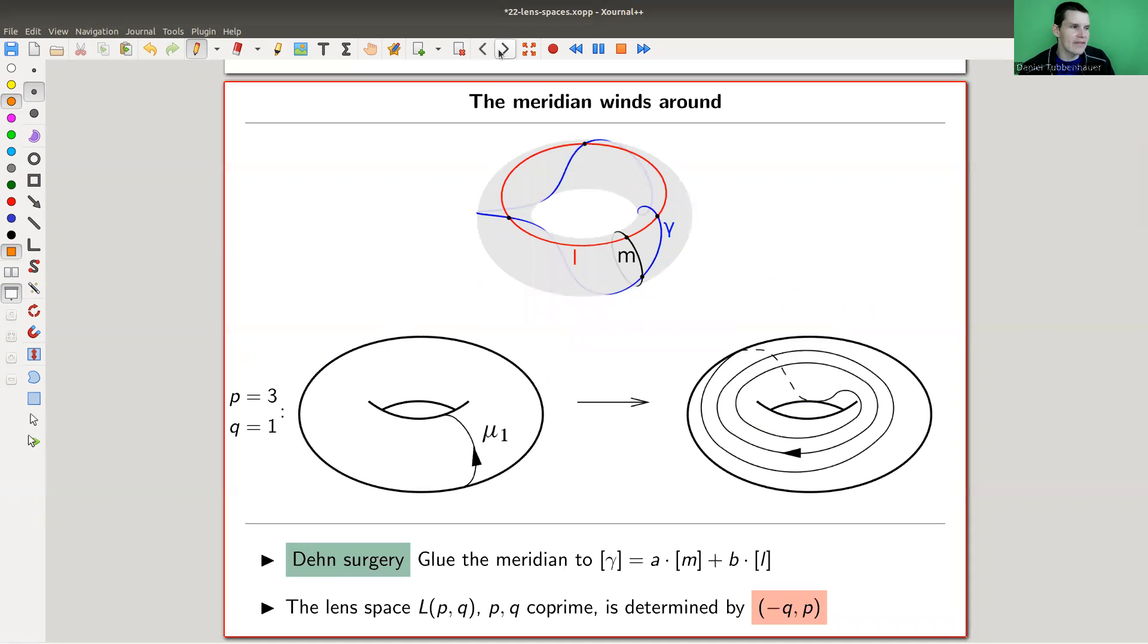Remember that we had this picture of the meridian mapped to a certain curve gamma here, and that defines a gluing of the torus. This is defined through the gamma as a times the meridian plus b times the longitude, depending on how often we go around. For example, in this picture I go around in this direction p equals 3, q equals 1.